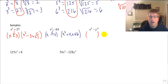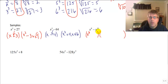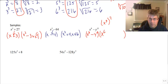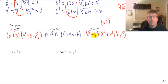Sample problem three: a difference of two cubes where all exponents are multiples of 3. The cube root of x to the ninth is x to the third, and the cube root of y to the fifteenth is y to the fifth. Carry down the minus sign. Square x cubed to get x to the sixth, and square y to the fifth to get y to the tenth. The middle term is x cubed times y to the fifth. We've used our one minus sign, so the trinomial is all pluses: (x³ − y⁵)(x⁶ + x³y⁵ + y¹⁰).